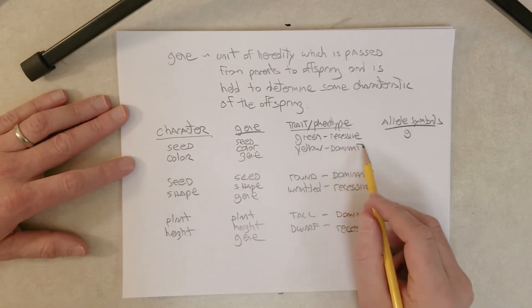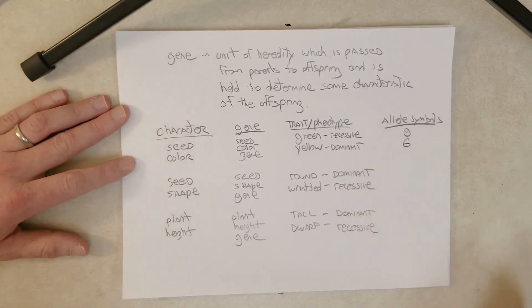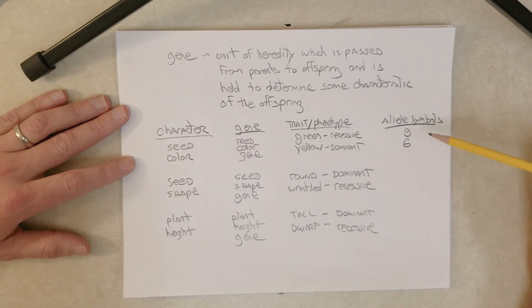So we're going to use a small g to symbolize the allele that causes the green phenotype. Now, the dominant version of the gene, the dominant allele of the gene that causes yellow, we are going to use a big G. So you can see the allele symbol is based on the recessive phenotype. The lower case is for the recessive allele. The upper case is for the dominant allele.